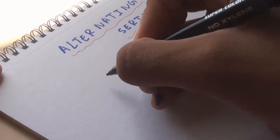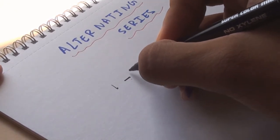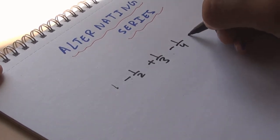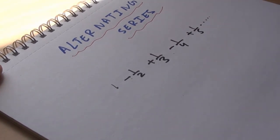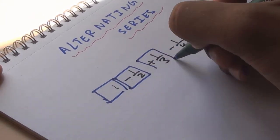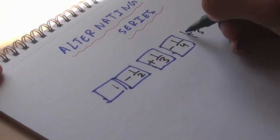Alternating series. So far, we have worked to find the convergence of positive term series. Now, we land ourselves upon alternating series. A series in which the terms are alternately positive or negative is called an alternating series. For example, 1 - 1/2 + 1/3 - 1/4 + 1/5 and so on.